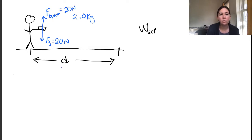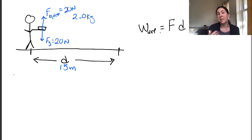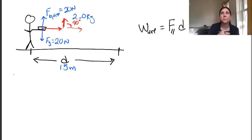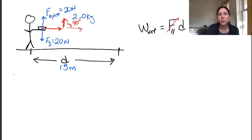Let's say I go across the room 15 meters. The work done by Dr. P is the force times the displacement, but it's not just the force in any direction. This is the force parallel to the displacement. I'm walking horizontally, but my force is upward, so the angle between the direction of travel and my applied force is 90 degrees. The force parallel to the direction of travel is zero.